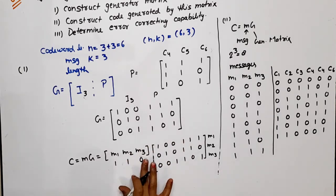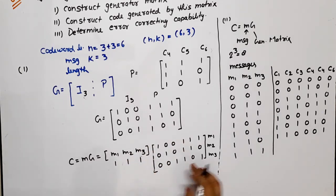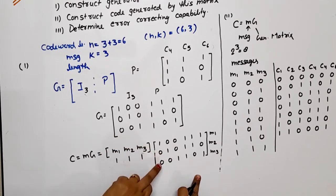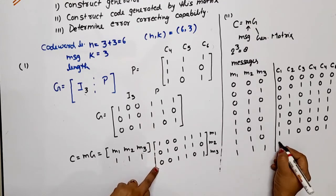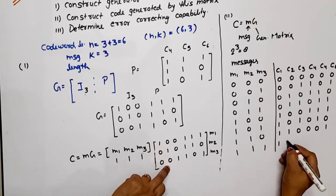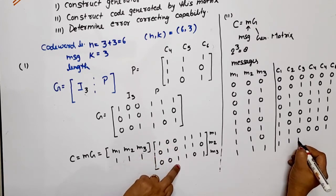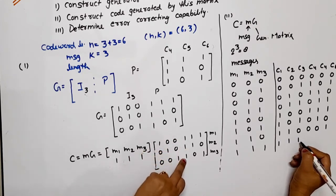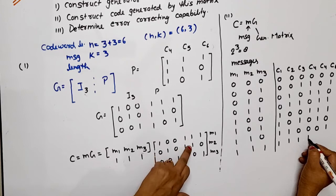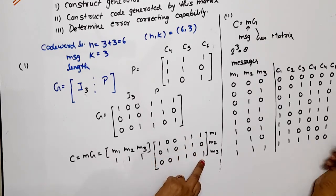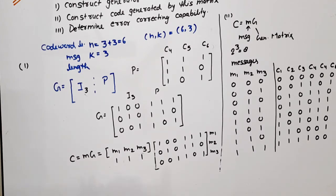For the last message 111, all message bits are available. XORing all three rows: the result for the parity bits — 1 XOR 1 XOR 1 = 1, 1 XOR 1 XOR 0 = 0, 1 XOR 0 XOR 1 = 0. So code word is 111100.